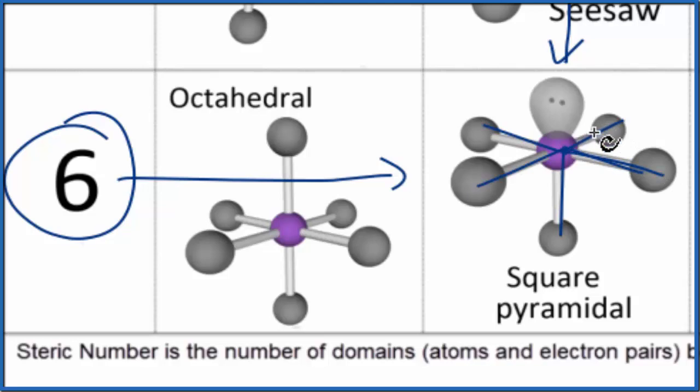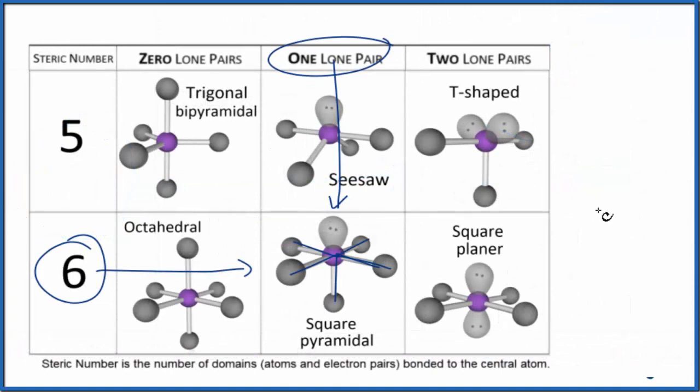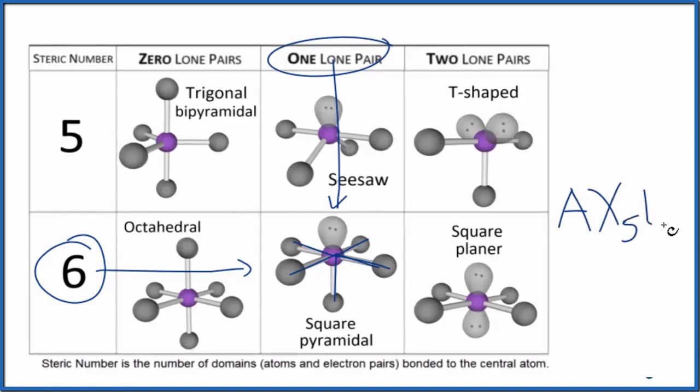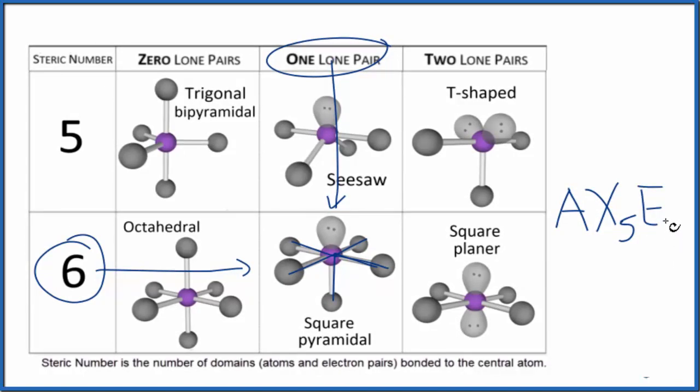You could also use the AXE notation. A, that's the central xenon atom. X, that's the atoms bonded to that xenon, those five fluorine atoms. And E, that would be the lone pairs. You have one lone pair. Sometimes they leave the one off. So you know that AX5E1 would be square pyramidal. Or if you were allowed, you could look that up and find that it's square pyramidal as well.